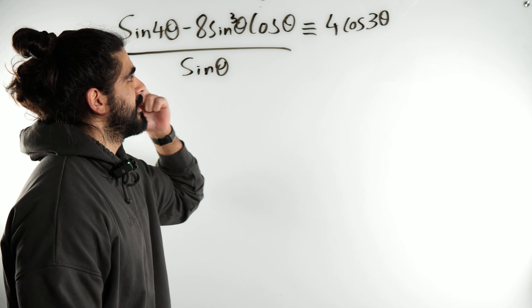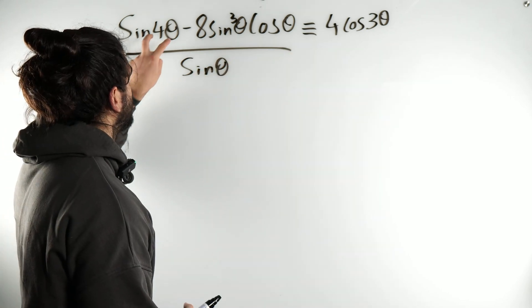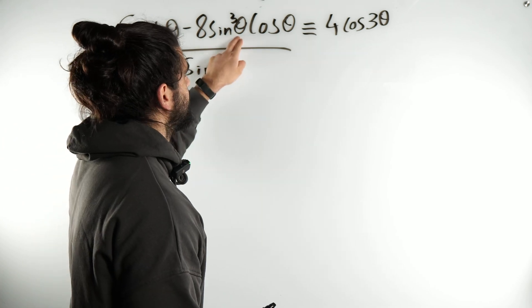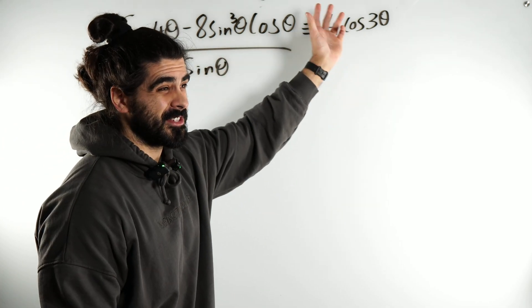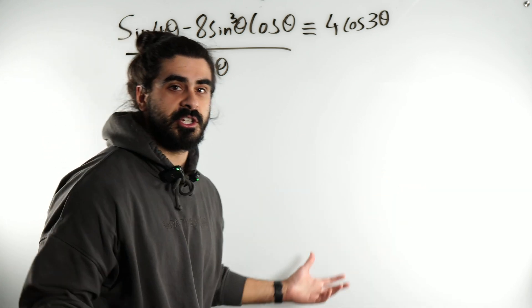So, prove this is this. Alright, a little bit awkward because we've got 4 theta, theta, 3 theta. 3 theta is a difficult angle because there's no double angle rules. I'm thinking about the addition rules.